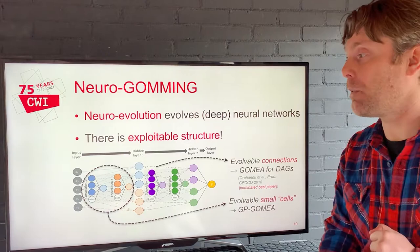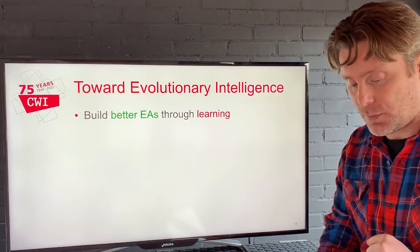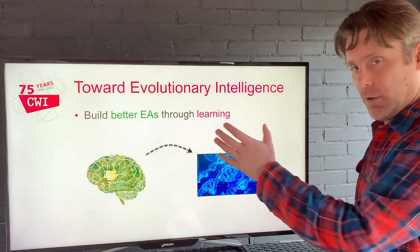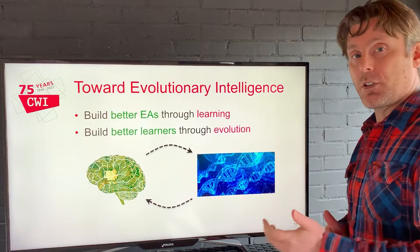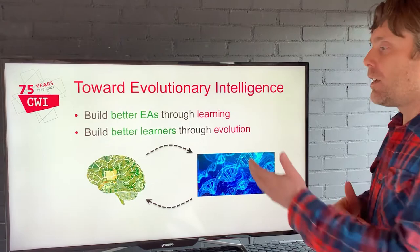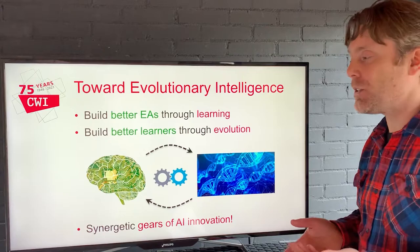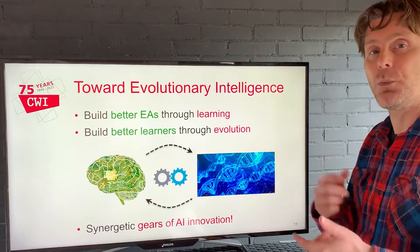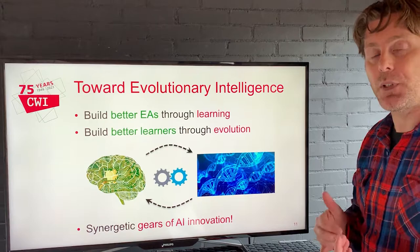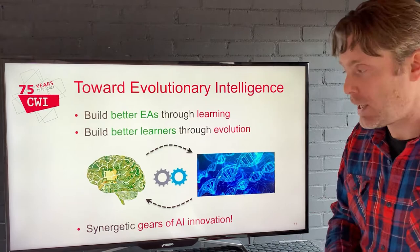That's something we're starting to do now and have a few projects running on. This puts us on the path towards real evolutionary intelligence, because I've been making better EAs by putting machine learning techniques inside of EAs, but I've also just said we are now building better learners — automatically finding machine learning techniques better than standard techniques through evolution, finding the best possible neural architectures. What I see is synergetic gears of AI innovation, where if we improve this side, we can improve that side and vice versa. By putting them in a loop, we can get ever more competent and faster evolutionary computation and machine learning, which would really give rise to evolutionary intelligence.